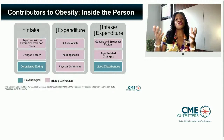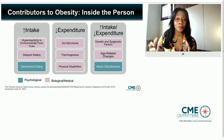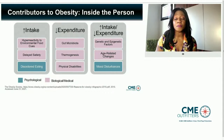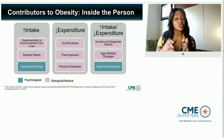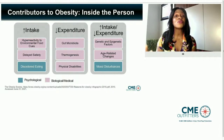When we look at things that might increase intake and decrease expenditure, we have to pay attention to genetic and epigenetic factors. It's important to recognize the heritability of obesity and that weight is indeed more heritable than height itself. Age-related changes are extremely important, particularly in women's lives — there are three key points where we see major weight shifts: at the onset of menses, pregnancy, and menopause. And then mood disturbances like depression and anxiety.